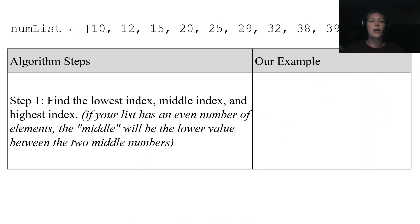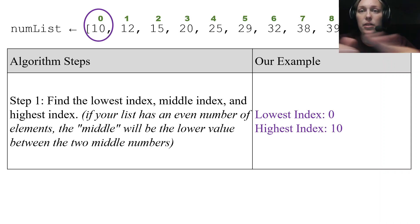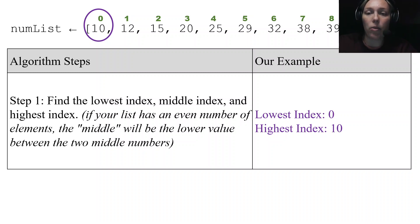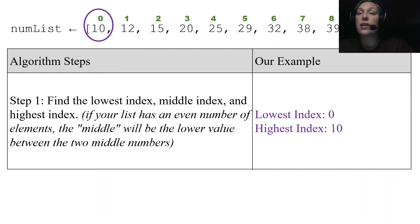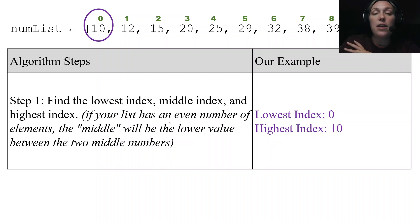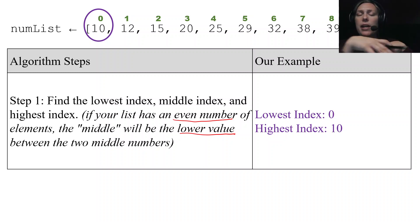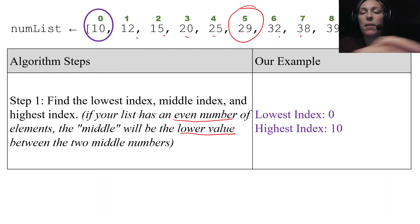Here's the algorithm. Step one: we find the lowest index, middle index, and highest index. The indices are shown in green. Our lowest index is index 0 — always 0. Our highest index in this example is 10, which is always array.length minus one. To find the middle value: for an odd number of elements we have a distinct middle. If your list has an even number of elements, the middle will be the lower value between the two middle numbers due to integer division and truncation. The math: take the low index plus the high index and divide by two. In our example, zero plus ten divided by two is five — that's our middle index.